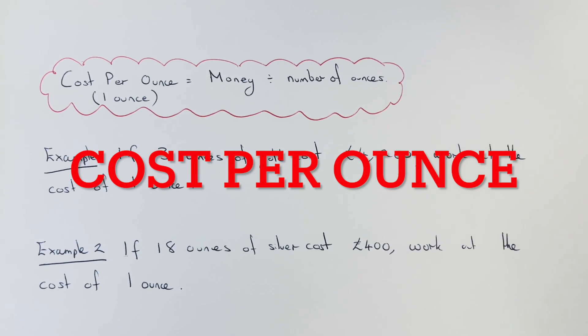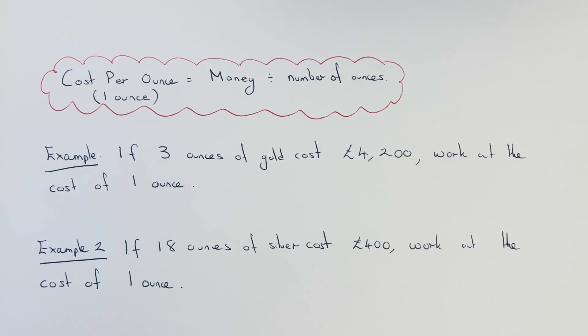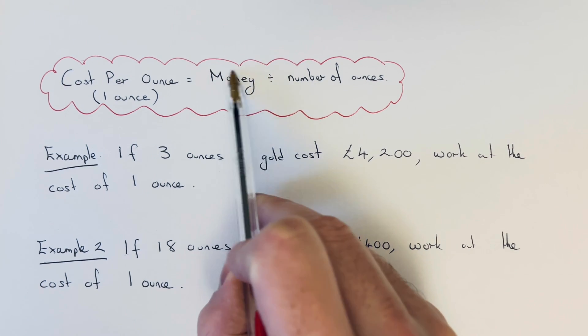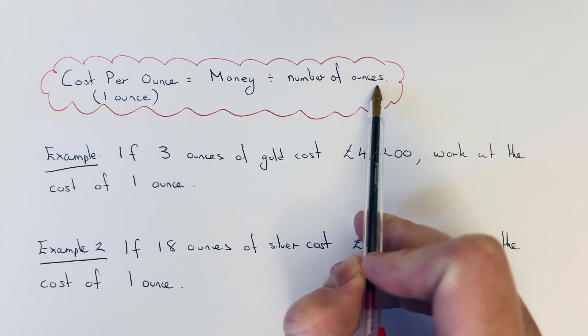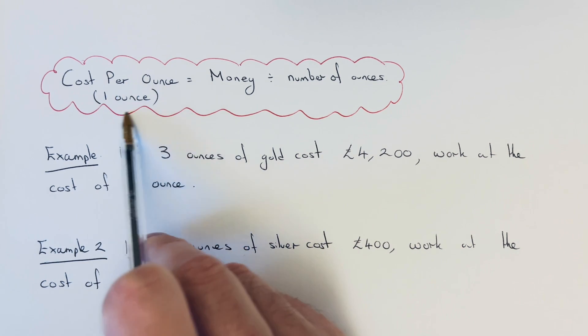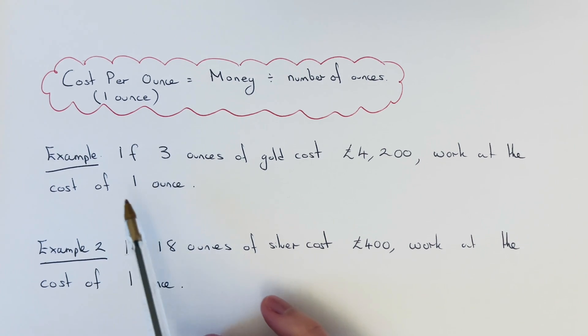Hi guys, welcome back. This is Maths Mark. Today I'm going to show you how to work out the cost per ounce. To do this, you just get your money and divide it by the number of ounces which you are buying. This is exactly the same as working out the price of one ounce.